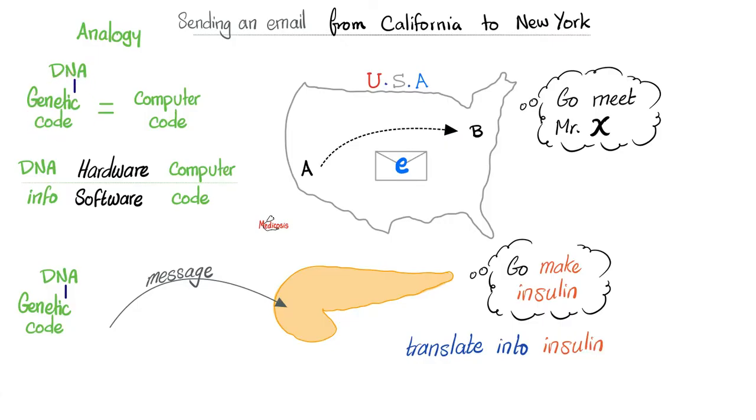Remember that your genetic code is analogous to the computer code. There is hardware - those are the molecules. Now we're talking DNA, RNA, nucleoside, nucleotide, etc. And there is software, that's the code. For instance, the sequences of nucleotides on your DNA will determine the codon, and the codon will determine what kind of amino acid would I put, and the amino acid will determine what kind of protein will be secreted.